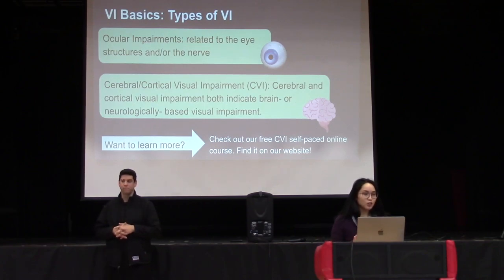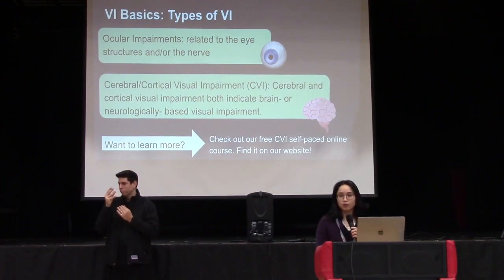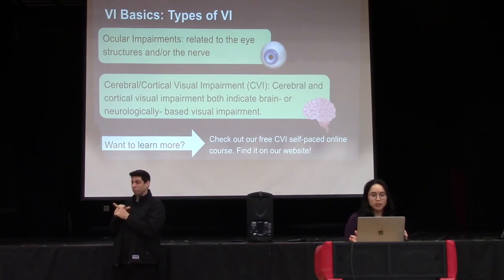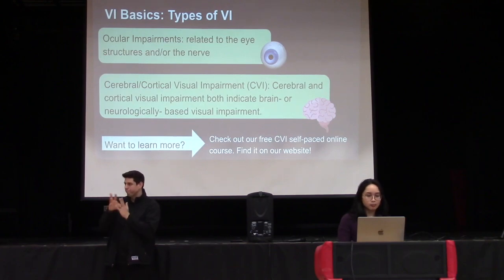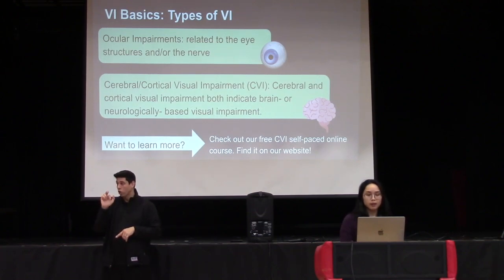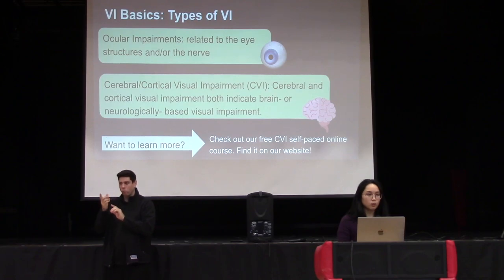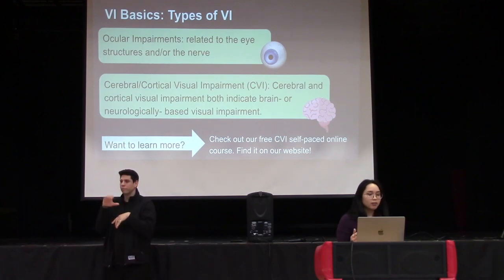This training is just going to briefly go over basic information. We have other videos on our California School for the Blind YouTube channel with basic information if you've never worked with a student with visual impairments. There are various types of visual impairment — ocular impairment refers to sight problems caused by one or more parts of the eye or nerve not functioning properly. Examples include challenges with visual acuity, visual field loss, retinal detachment, and cataracts. Our video called More Than Meets the Eye goes into more detail.